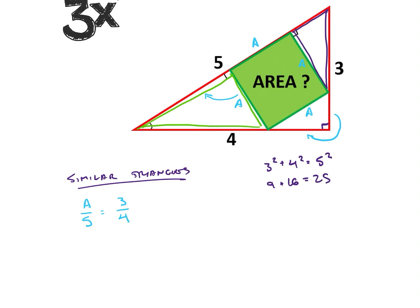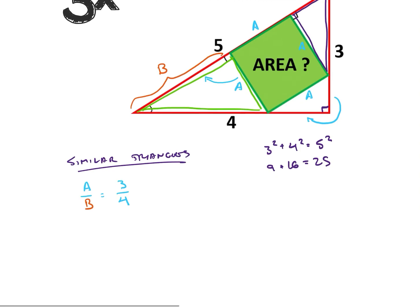Sorry, that's not five. So a over this side over here, so we'll call this tentatively b. So a over b is equal to three fourths.